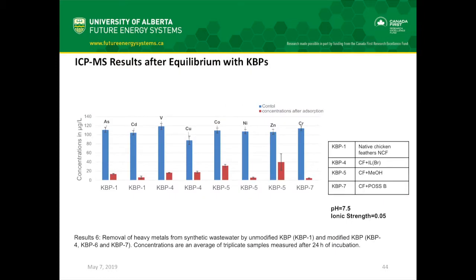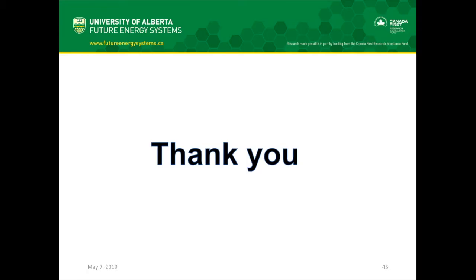The adsorption experiment results were highly promising. Keratin biopolymer 1 reduced 98% of arsenic and cadmium. Keratin biopolymer 4 reduced 60 to 100% of vanadium and copper. Keratin biopolymer 5 reduced copper, nickel, and zinc. Keratin biopolymer 7 reduced chromium by about 100%. Thank you, that's what I have to say.